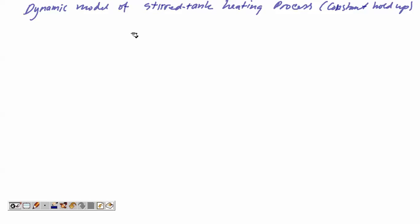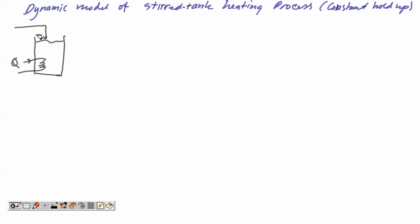Bismillahirrahmanirrahim. Let me start on the dynamic model of the stirred tank heating process. We install the heater here with input energy Q, input stream temperature Ti, and mass flow rate Wi.